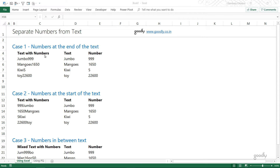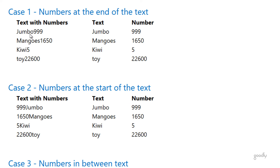In the first case we have numbers at the end of the text. You can see the word 'jumbo' and the number 999, 'mangoes' and 1650. The problem is that neither the text nor the number is of fixed length, so we can't use a straight LEFT, RIGHT, MID function or the text-to-columns approach. The logic is to find out where the number is starting — here it starts at the sixth position.